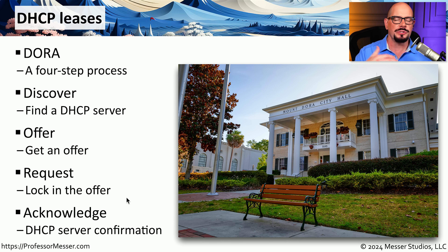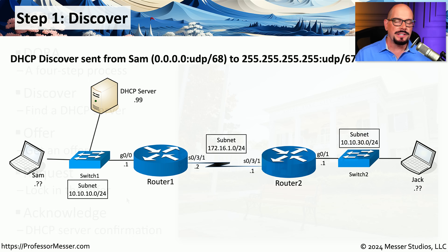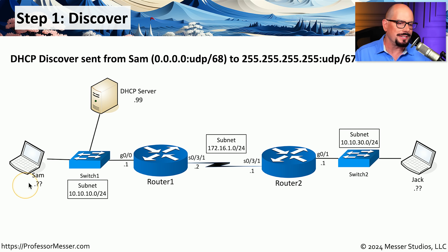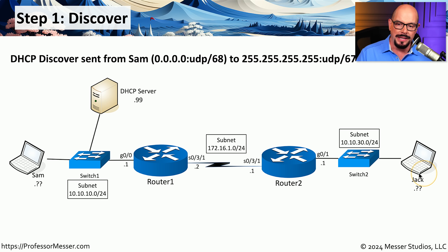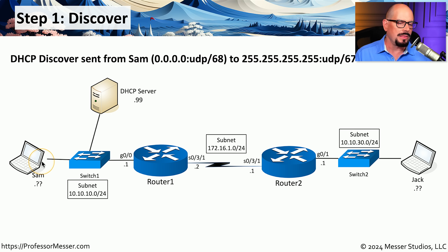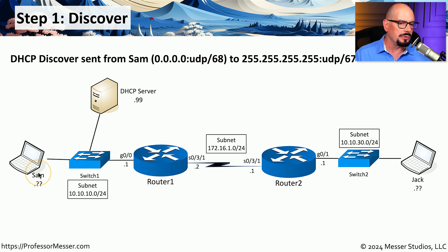This process occurs every time someone connects to the network for the first time and needs to get an IP address from a DHCP server. Let's take a scenario where we have Sam on the network, who has just turned on her computer and does not yet have an IP address, and Jack, who's also just turned on his laptop and also does not have an IP address. The default configuration for practically every operating system these days is to look for a new IP address using DHCP, so the first thing Sam's computer will do is perform step one — the Discover step.